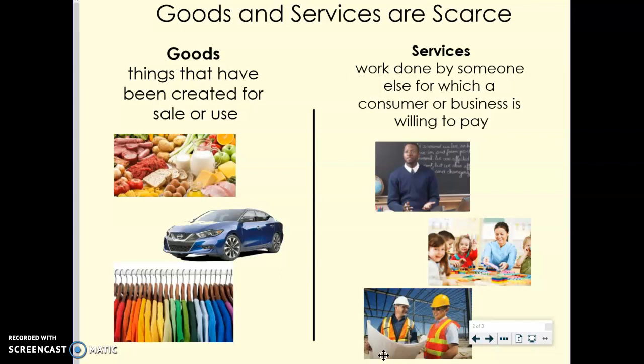Cell phones are a good example. It might seem like cell phones are an unlimited good because almost everyone has one and there are constantly new phones being released, but the material and the labor needed to make them is scarce, which makes those phones scarce as well. Going back to goods and services, those resources — land, labor, machines, materials — those things are scarce.